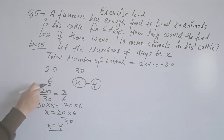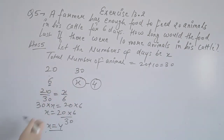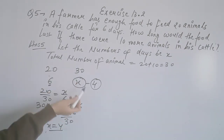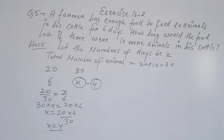So 20 animals can feed for 6 days, and when we increase by 10 animals to 30, the food lasts for 4 days. The number of animals and number of days are inversely proportional.